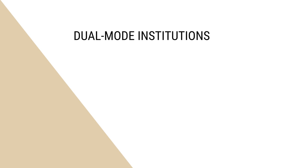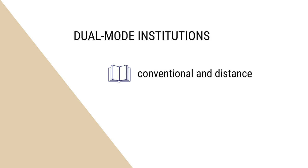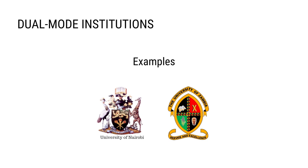The dual mode institution is designed to provide education through both traditional classroom-based methods and distance-based methods. These institutions provide courses in both modes with a common examination. They distinguish between learners as two types: regular and external. The University of Nairobi and the University of Zambia are examples of dual mode institutions.